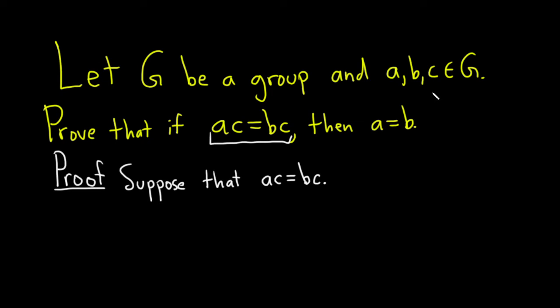So because c is in G, and G is a group, the inverse of c also is inside G. So let's write that down. Since c is an element in G, we have c inverse in G.